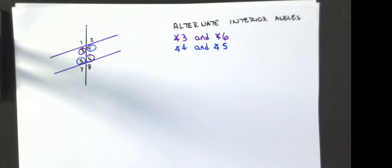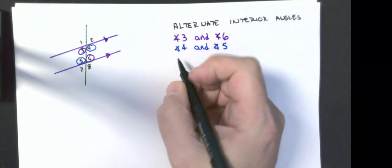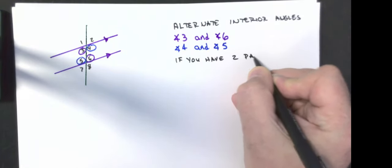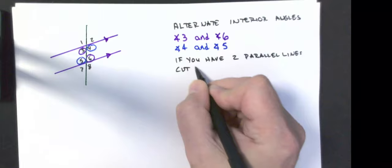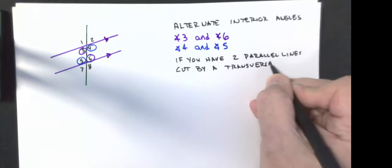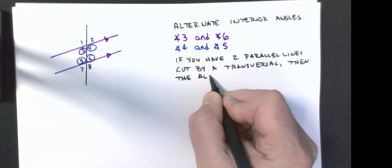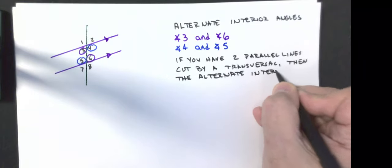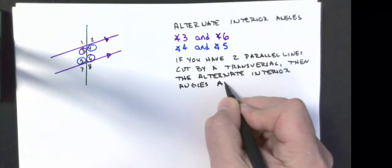Just like the other two types, if you have two parallel lines cut by a transversal, then the alternate interior angles are congruent.